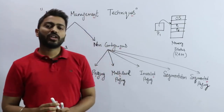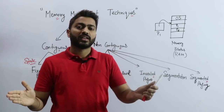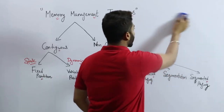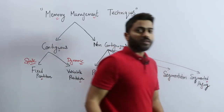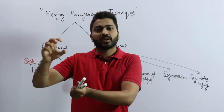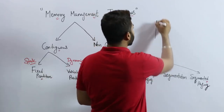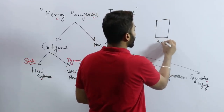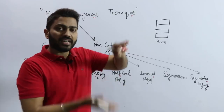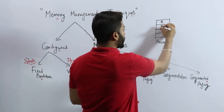Non-contiguous — as the name suggests — means we are not doing continuous allocation. In non-contiguous allocation, a process is divided into different blocks or partitions and stored at different different locations of the memory, not in a continuous manner.